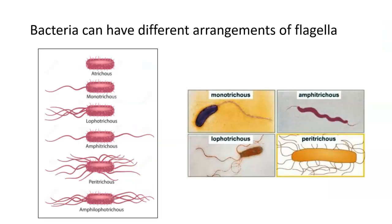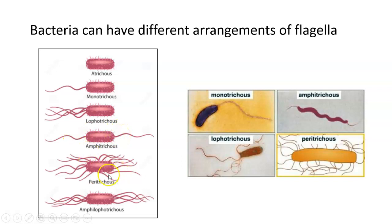Bacteria can have different arrangements and different numbers of flagella. Some bacteria don't have any flagella at all. Some have a single flagellum on one end — those are called monotrichous (mono means one). Some have a group of flagella at one pole, some have two flagella one at each end, and some have flagella all over the outside. The arrangement pattern seen for flagella is just dictated by the species of bacteria.